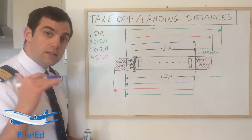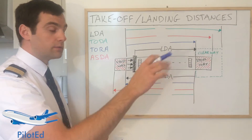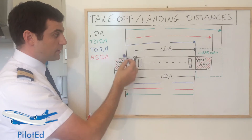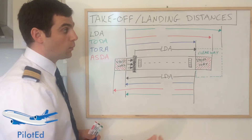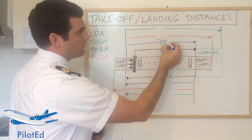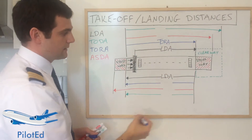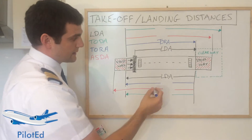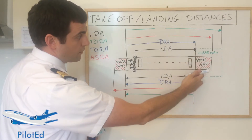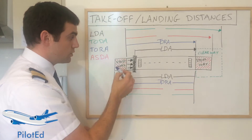Next is the Takeoff Run Available — the amount of asphalt we use before we lift off. In the easterly direction we can use the full runway, from beyond the displaced threshold to the end of the runway, not including the stopway. That is our Takeoff Run Available, and our actual takeoff run must be calculated to be less than that. In the westerly direction it would be exactly the same — from the threshold of the runway to the end of the runway, all the asphalt available, not including the stopways.